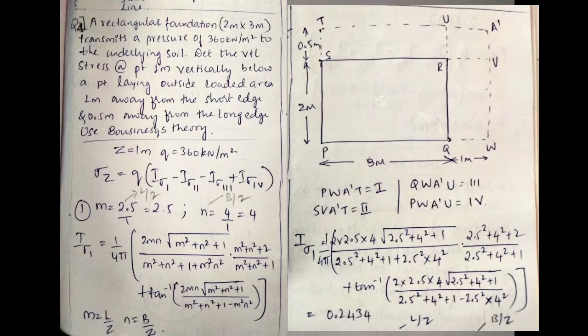The formula is σz equal to q × (Iσ1 − Iσ2 − Iσ3 + Iσ4). Using m equal to l/z and n equal to b/z: for area 1, l=2.5, z=1 giving m=2.5; b=4, z=1 giving n=4. Substituting into the influence factor formula yields Iσ1 equal to 0.234.